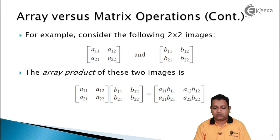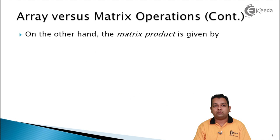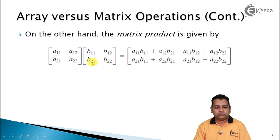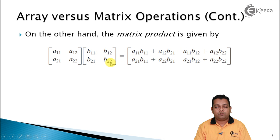On the other hand, for the matrix product, the outcome is somewhat different, following matrix multiplication rules. The first element is a11·b11 + a12·b21, and the first row, second column element is a11·b12 + a12·b22. So the resultants of the array product and the matrix product are different. This is the distinction between matrix operation and array operation. We assume array operation throughout the subject digital image processing unless it is stated otherwise.